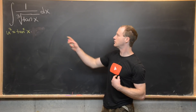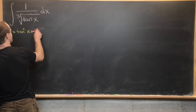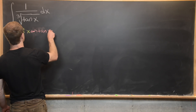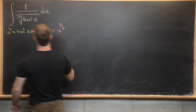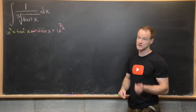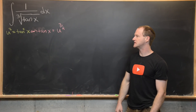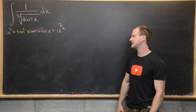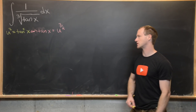If u cubed equals tangent squared of x, what does that tell us about tangent of x? It's not too hard to see that tangent of x is going to be u to the three halves. We're going to keep that around because we'll need it eventually. Next, what we want to do is calculate the du component in order to figure out what to do with this dx term.